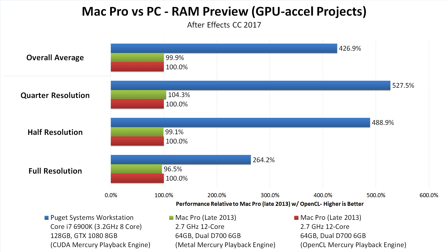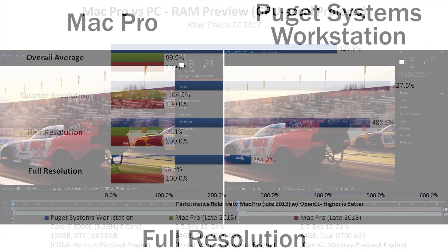With the GPU-accelerated projects, the performance was quite a bit different. The PC was about 3 times faster at full resolution, and somewhere around 5 times faster at half and quarter resolution. This is quite extreme, and not actually something we expected when we started our testing, but we did our tests multiple times and the results were very consistent — the PC really is this much faster when you use heavy GPU acceleration in your projects.